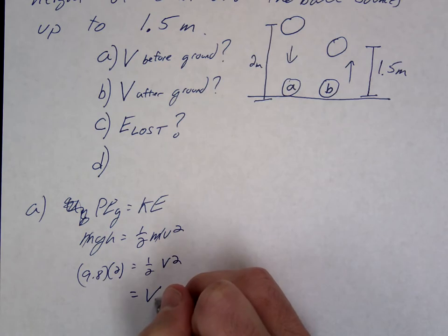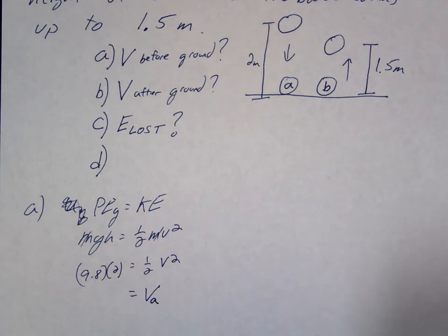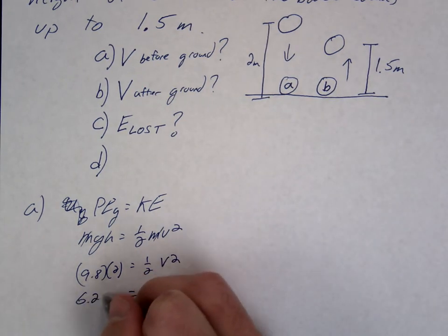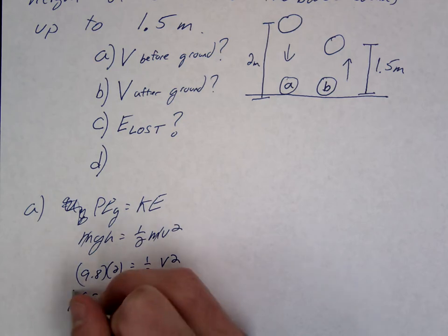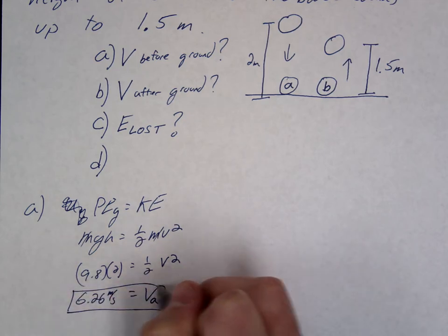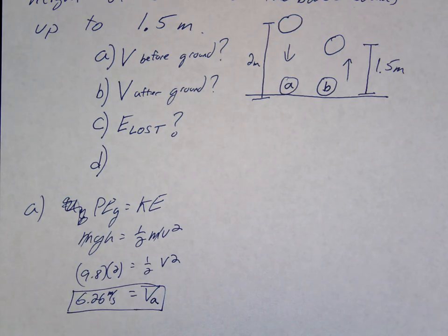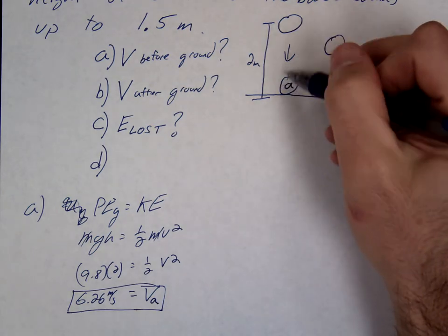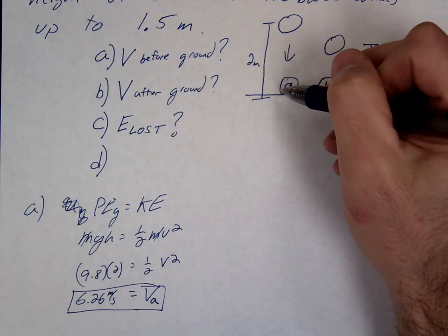Okay, so we're getting for the V at point A 6.26, so that's how fast it's moving right before hitting the ground, 6.26 meters per second.